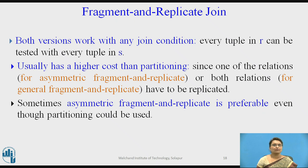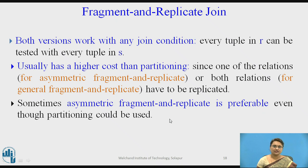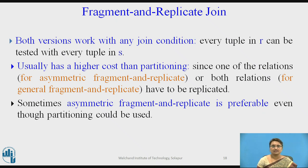To summarize Fragment and Replicate Join: in both versions, every tuple of R is mapped and compared with every tuple of S. It has higher cost because both partitioning and replication are involved, but more parallelism is implemented. Usually the asymmetric Fragment and Replicate Join is preferable.